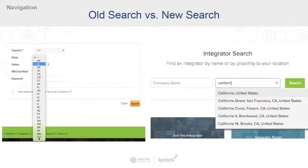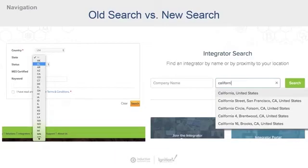Another example of refining a drop-down menu into something that works better is what we recently did for the Inductive Automation integrator search. Our old search on the left used a series of drop-downs for navigating through a list of 50-plus items — a real usability problem we needed to address. Our new search on the right uses a Google Maps API to match results to a typed-in location. The user can use any type of input they have in mind — address, zip code, city, state, country — really anything they're thinking of.